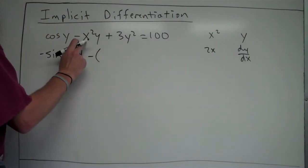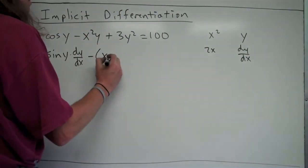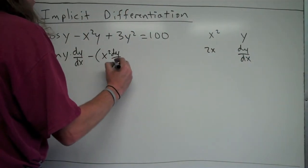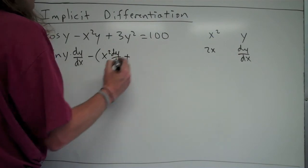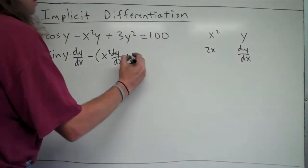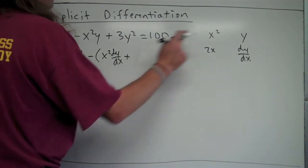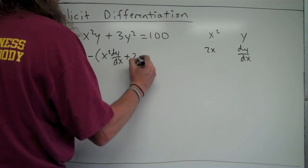So for my product rule, I'm doing x squared times the derivative of y, so it's x squared times dy over dx, plus y times the derivative of x squared, so y times 2x. Which I guess, when I multiply y times 2x, I'll rewrite that as 2xy.